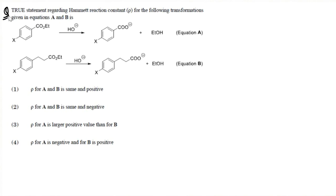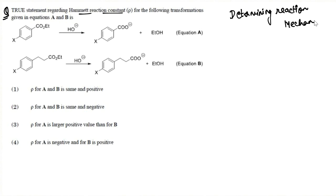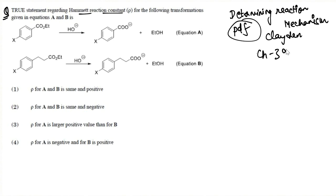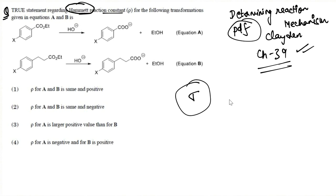The next question is based on the Hammett reaction constant. If you haven't studied this concept, you can find it in Chapter 39 of Claydon chemistry — the chapter on determining reaction mechanisms. The question asks for the true statement regarding the Hammett reaction constant rho for the given transformation in equations A and B.